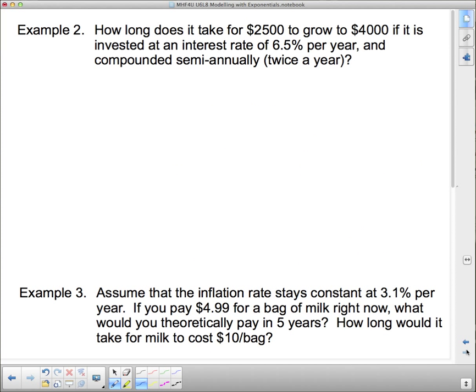Next question: How long does it take for $2500 to grow to $4000 if it is invested at an interest rate of 6.5% per year and compounded semi-annually twice a year? Again you may have done some of these questions before, we're going to look at this one again. Here's our general formula: A equals A₀, one plus - this is growing so we have to use plus - times one plus r to the n.